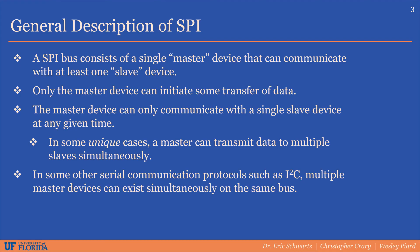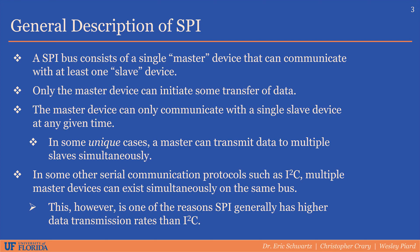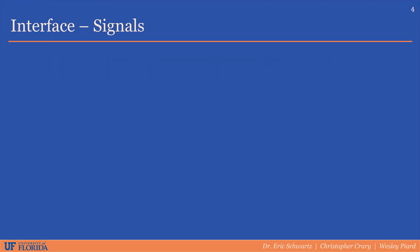While SPI only permits a single master device per bus, other serial protocols such as I2C provide more complex addressing schemes which allow multiple masters to occupy the same bus. However, there is additional overhead associated with I2C that causes it to have lower overall data transmission rates than SPI. Now the physical interface will be discussed, and later we will explore the protocol which will define how each signal must behave.